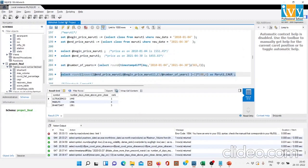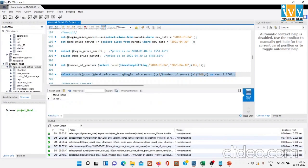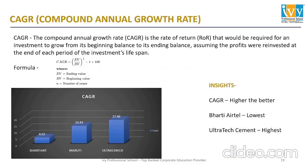The CAGR for Maruti Suzuki is 13.41%. Bharti Airtel's CAGR during the specified time period is 4.52%, and Ultratech Cement's is 17.96%.